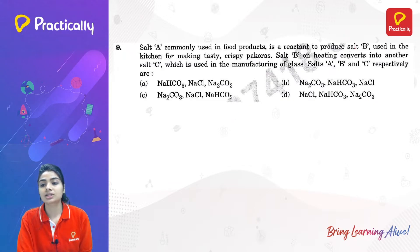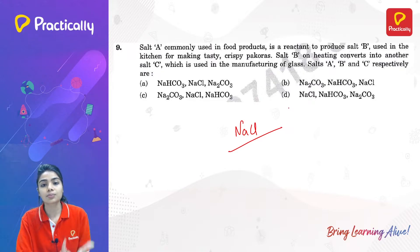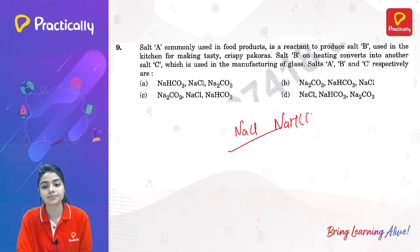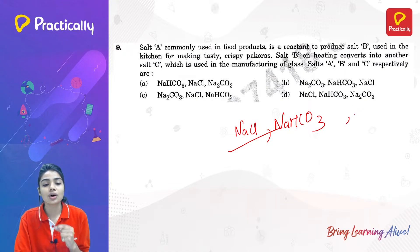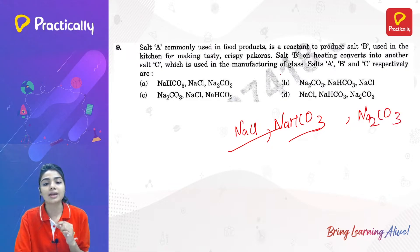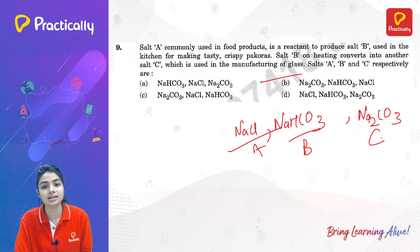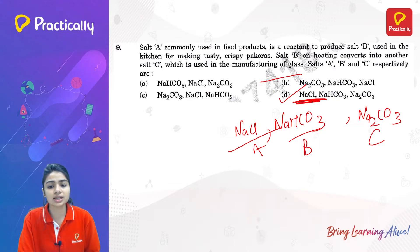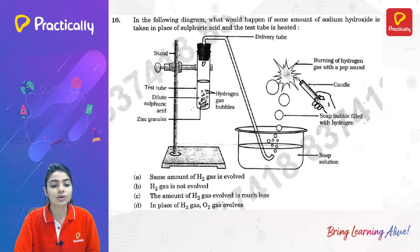A commonly used salt in food — salt A — is used as a reactant to produce salt B, used in the kitchen for making tasty crispy pakoras, which is sodium hydrogen carbonate (NaHCO₃). Salt C, used for manufacturing glass, is obtained by heating salt B to get Na₂CO₃ (washing soda). So A is NaCl, B is NaHCO₃, and C is Na₂CO₃. Option D, which lists NaCl first, is directly the correct answer.